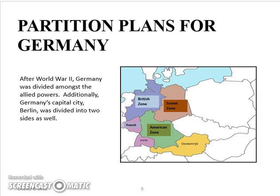The next event we'll look at is partition plans for Germany. Partition means a division — to divide up something. Germany was under the Nazis and Hitler in World War II, making it the main aggressor in Europe. After the war, the Allies looked to rebuild Germany and divided it up. Germany was divided amongst the Allied powers, each getting a zone. On top of that, Germany's capital city, Berlin, was divided into two as well.